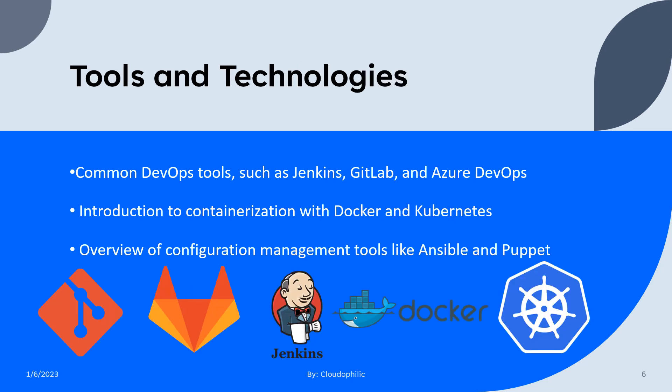There are various tools and technologies for DevOps. Some common DevOps tools are Jenkins, GitLab, and Azure DevOps. GitLab and Azure DevOps have similar use cases, whereas Jenkins is a CI tool which is used with other tools in order to achieve CI/CD.